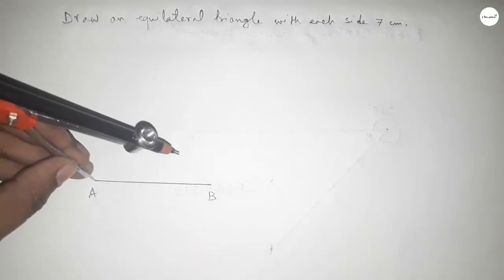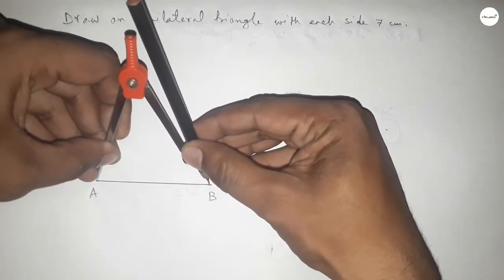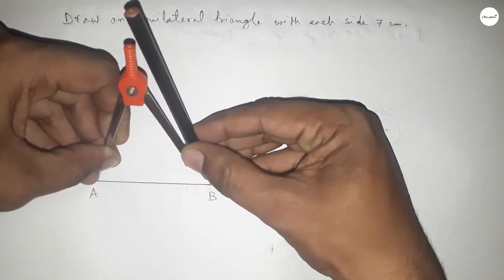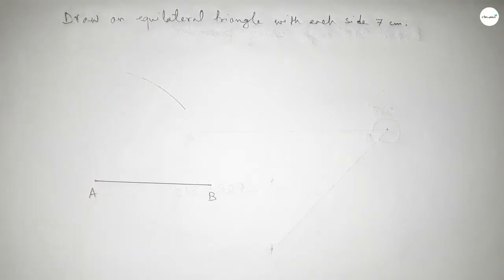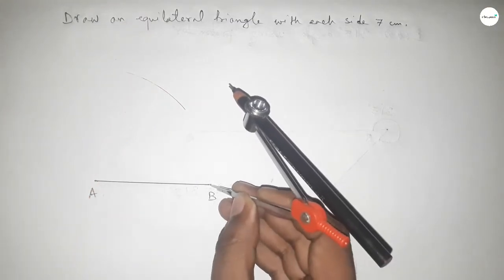Now taking the length AB by compass by this way and drawing arc with same length and putting the compass here and cut here.